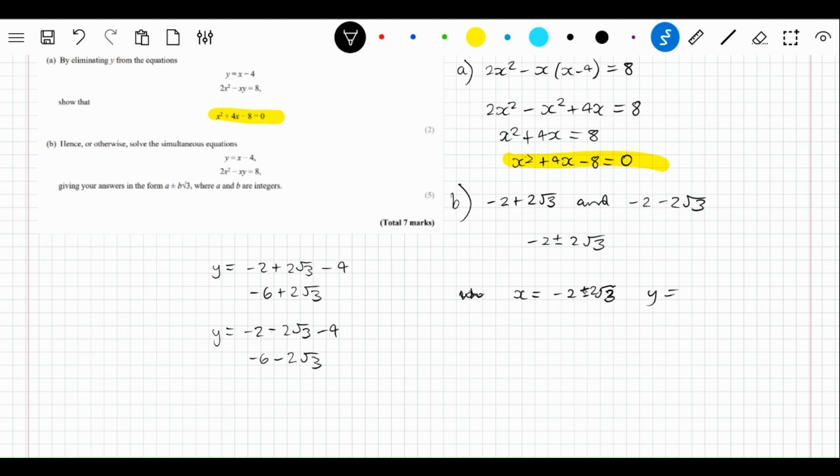There we go, that is our answer. You can also write it out as when x equals this version then y equals that version, but this way just makes it a little bit easier.